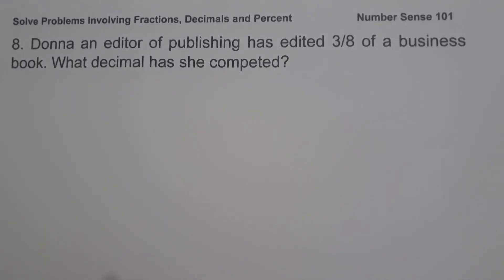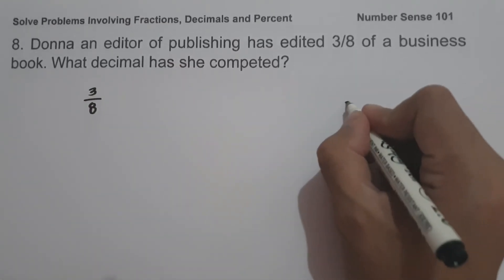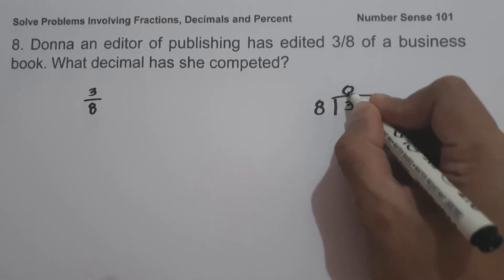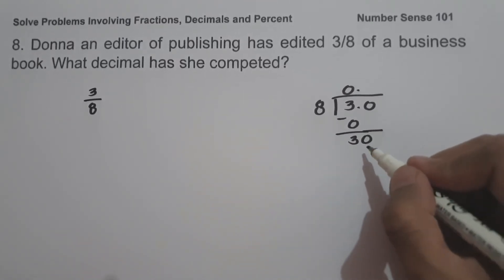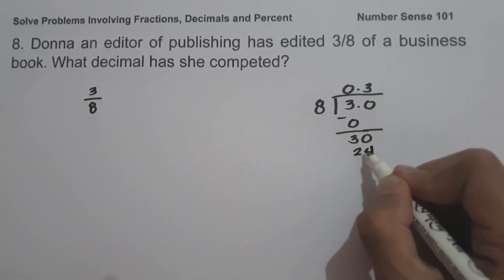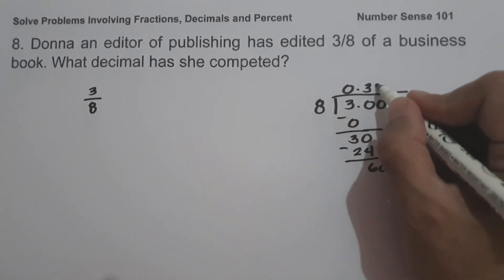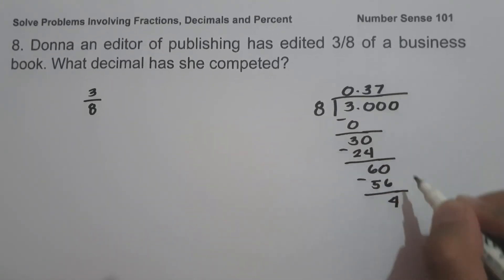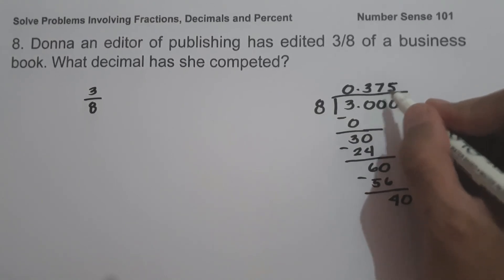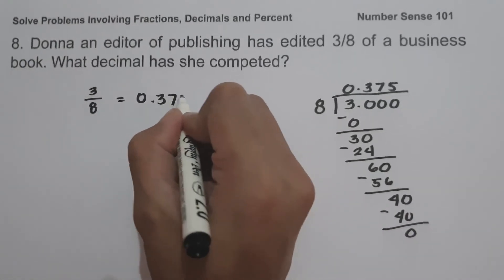On example number 8, an editor at a publishing company has edited 3 over 8 of a business book. What decimal has she completed? Since we have the fraction 3 over 8, let us divide 3 by 8. Bringing down zeros: 30 divided by 8 is 3, and 3 times 8 is 24; 30 minus 24 is 6. Next, 60 divided by 8 is 7, and 7 times 8 is 56; 60 minus 56 is 4. Then 40 divided by 8 is 5, and 5 times 8 is 40, remainder 0. So 3 over 8 in decimal is 0.375.